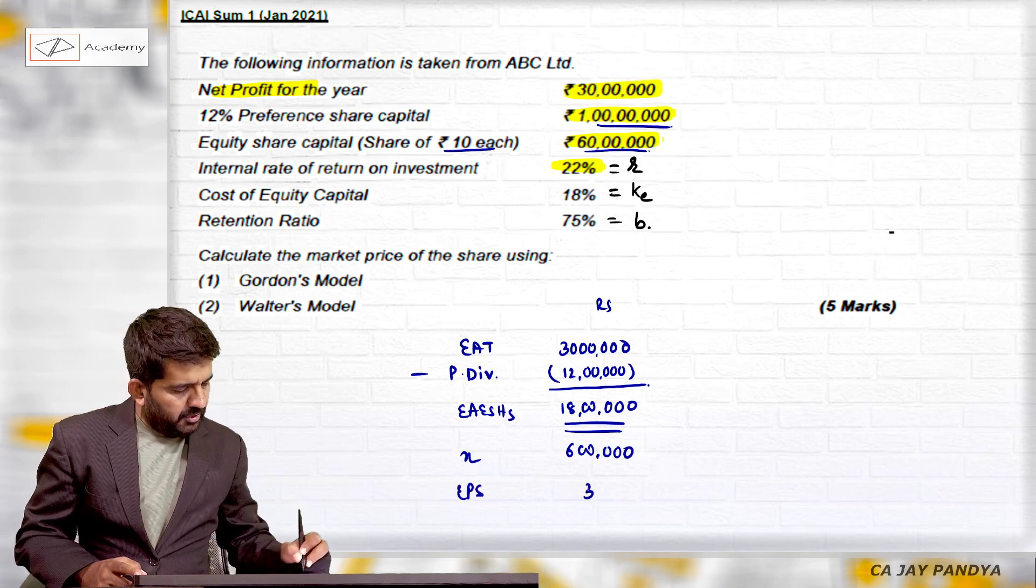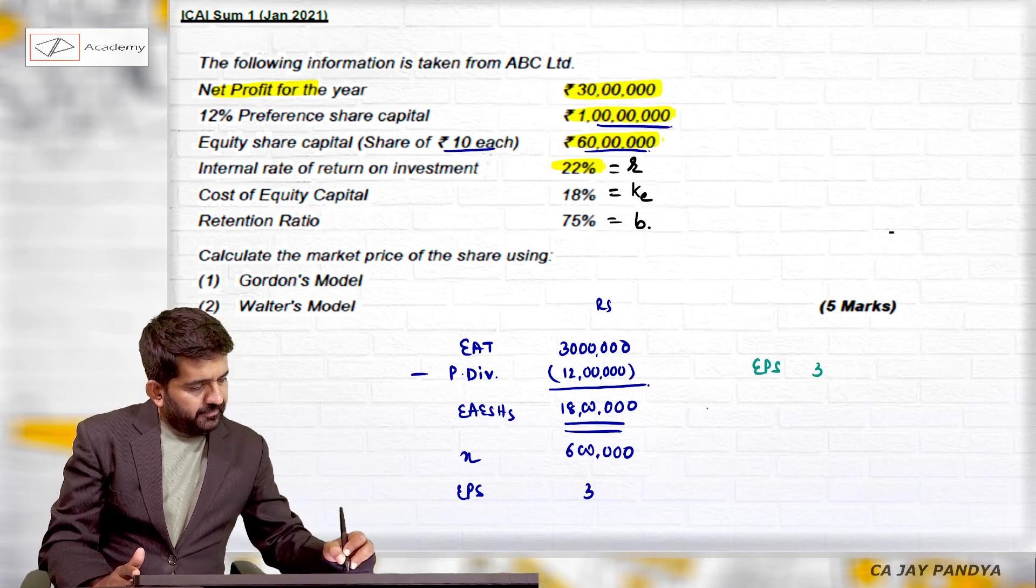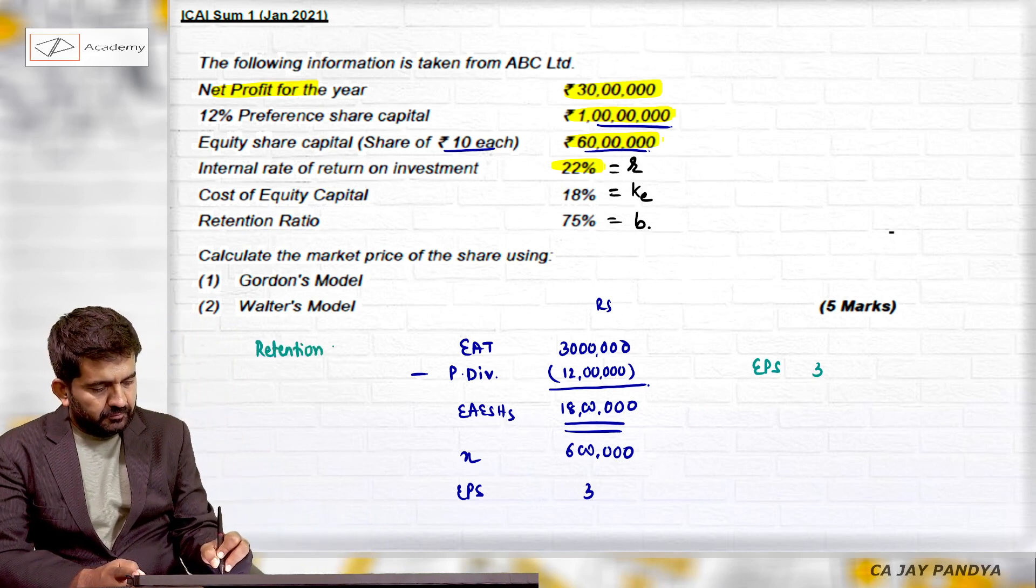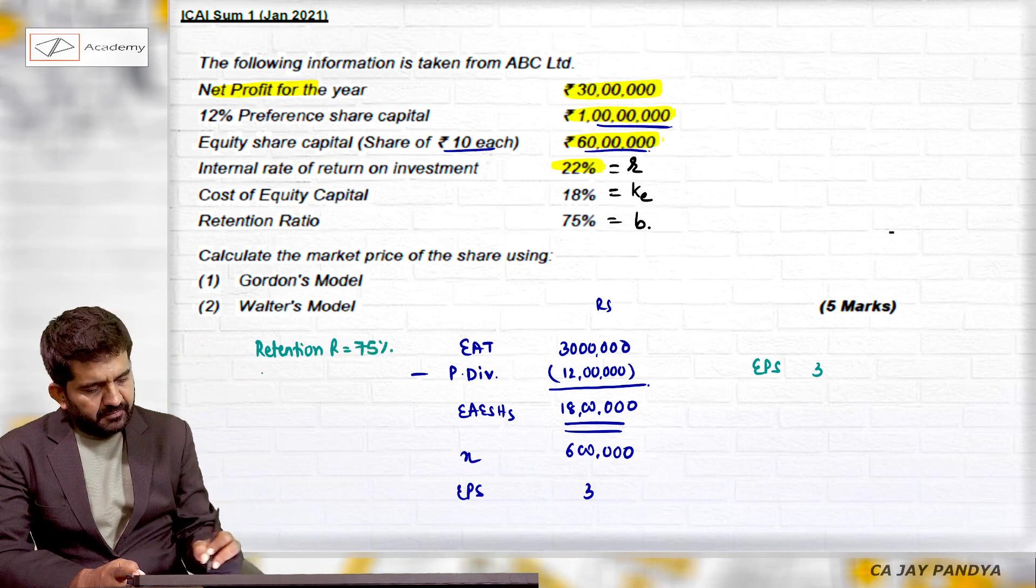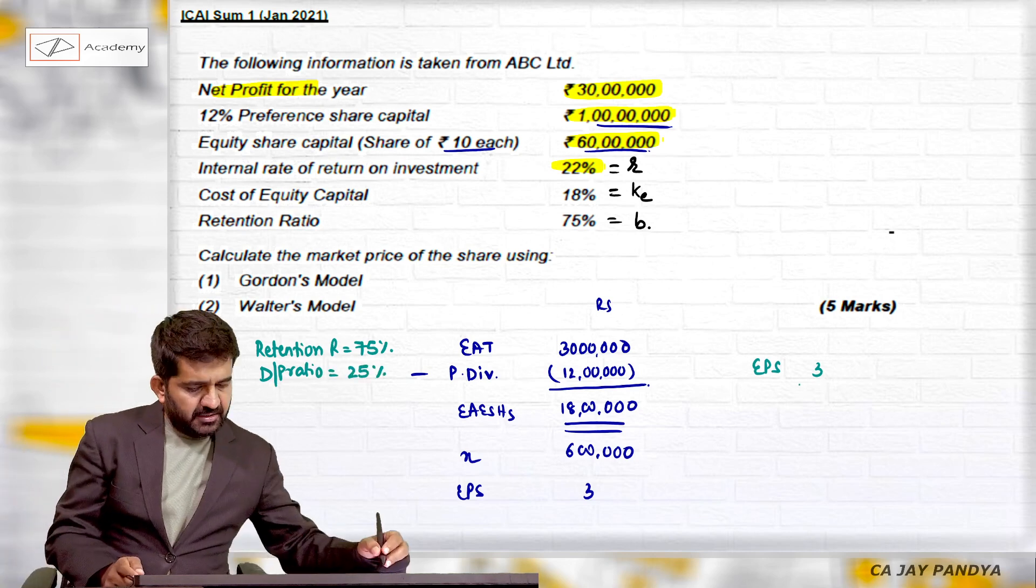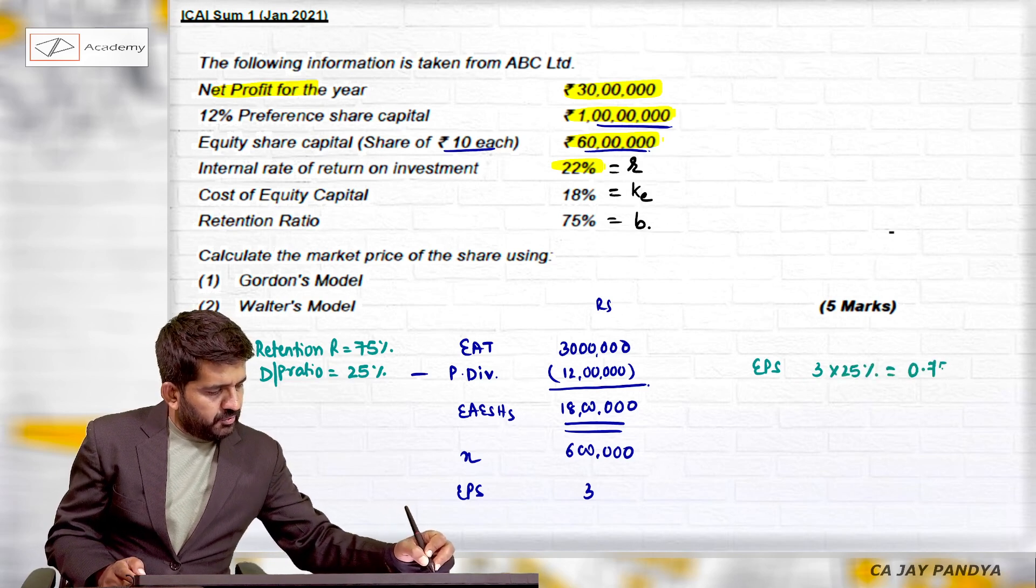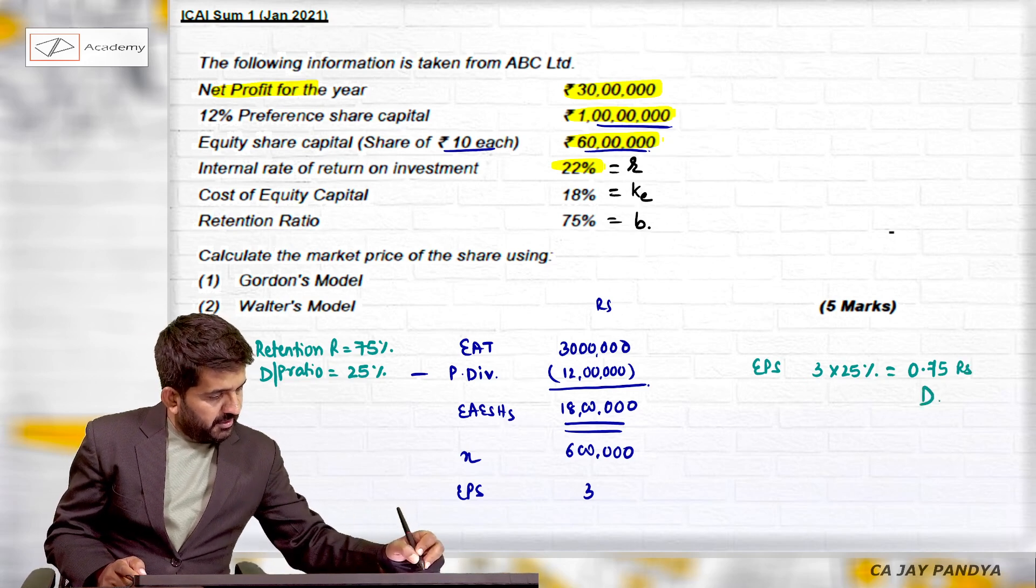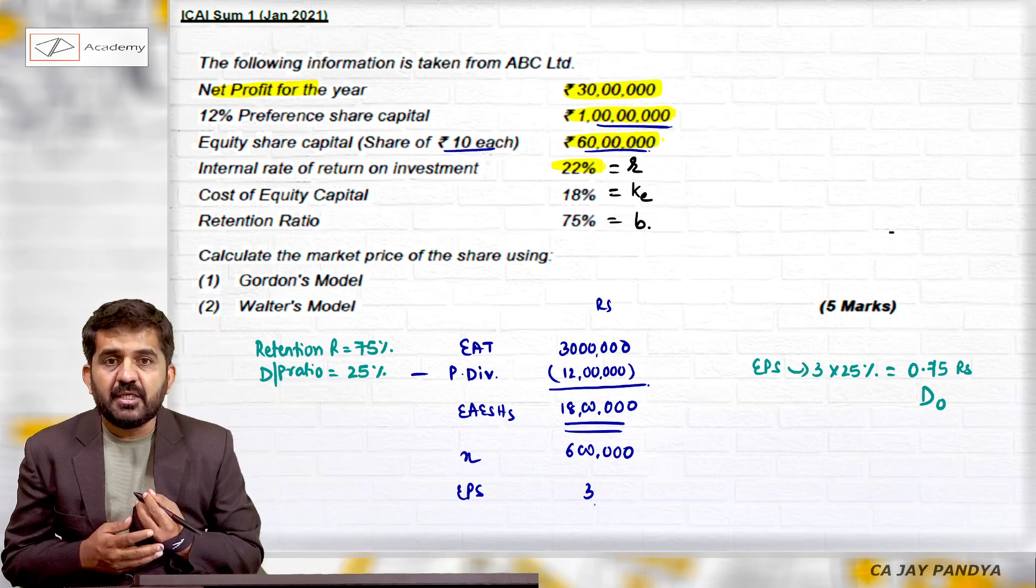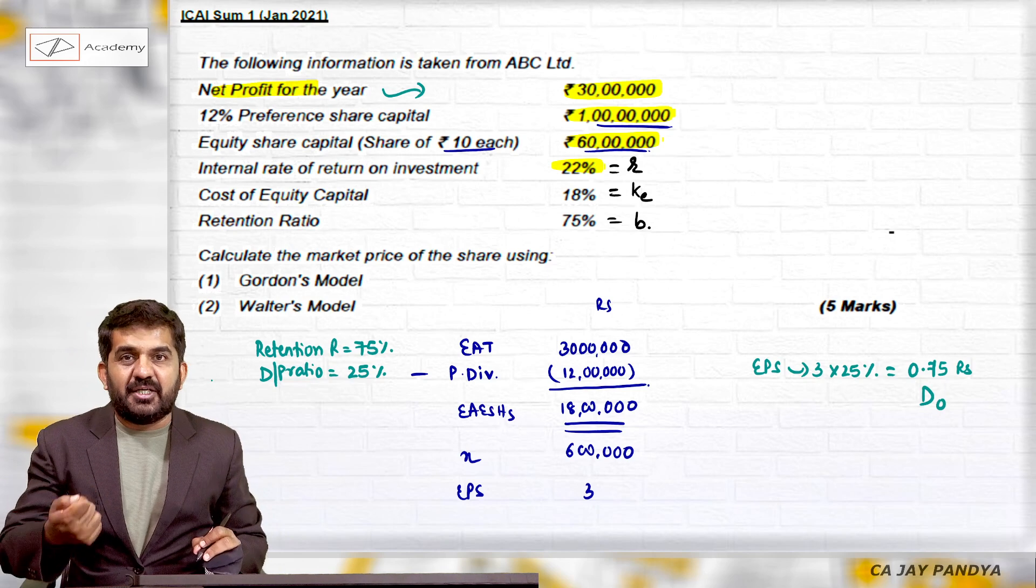EPS will be equal to 3, that is 18 lakhs divided by 6 lakhs. If EPS is 3, what is the retention ratio? It is 75%. Then dividend payout ratio will be 25%, that is 100 minus 75%. Into 25%, this is 0.75 rupees. This is D0 - EPS 3 multiplied by 25% equals 0.75. So we have got dividend per share, and this is reported profit, so this is D0 and not D1.